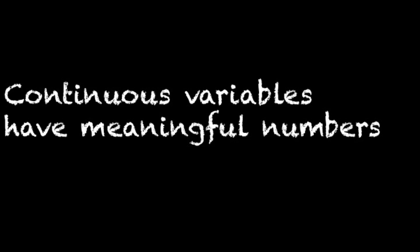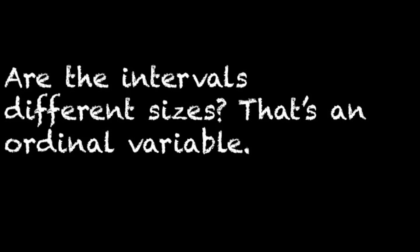If the numbers mean something, though, that's when we have a continuous variable. Once we figure out that we have a continuous variable, we have to decide which type of continuous variable we have. The first question we should answer is: are the intervals of the variable the same size? What we mean by equal intervals is that the distance between 1 and 2 is the same as the distance between 2 and 3. So if it's more difficult to get to the next number as you increase, or possibly decrease, those intervals are not the same.